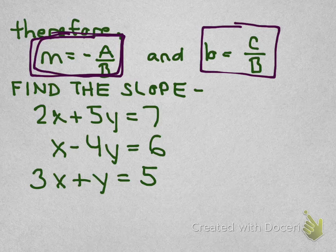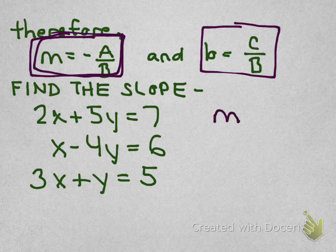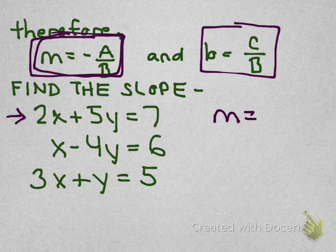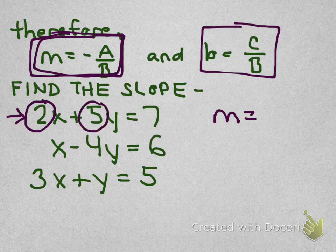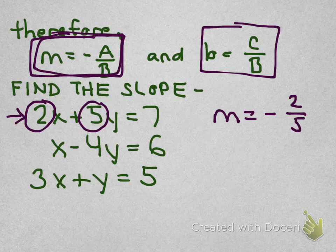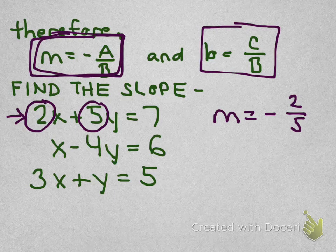So a little practice before we dive into parallel and perpendicular lines. We're going to find the slope of the three equations you see in standard form here. This first one, 2x + 5y = 7. Well, all we need to find the slope is A, which is positive 2, and B, which is positive 5. Put those in a fraction, we take the opposite, we know the slope of that line will be negative 2 fifths. And you can verify that by turning it into slope-intercept form if you like, and you can see that this is true.